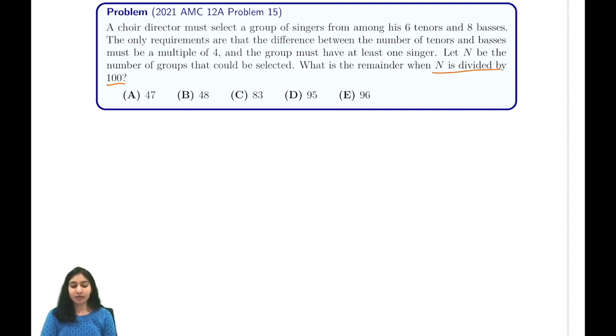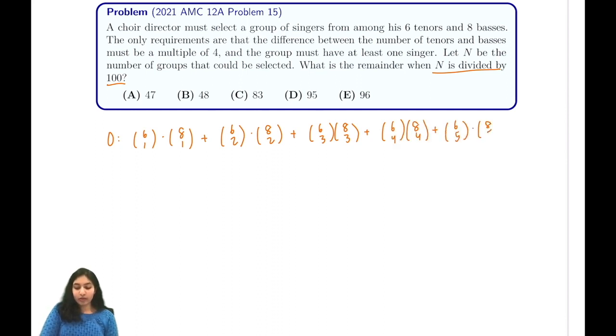This is a pretty complicated casework problem, so first we look at if the difference between the number of tenors and bases is zero. We could either have one tenor and one base, in which case there is 6 choose 1 times 8 choose 1 ways, or we could have two tenors and two bases where there's 6 choose 2 times 8 choose 2 ways. This will continue where we have 6 choose 3 times 8 choose 3 plus 6 choose 4 times 8 choose 4 plus 6 choose 5 times 8 choose 5 plus 6 choose 6 times 8 choose 6.